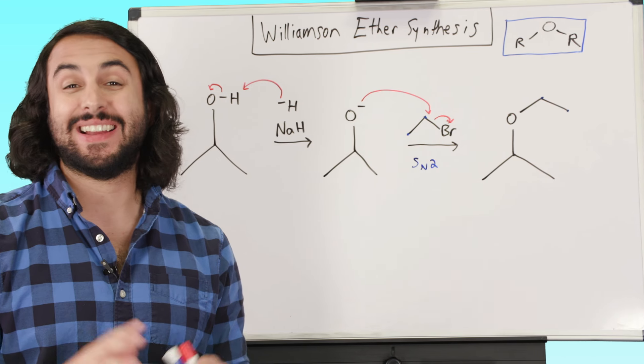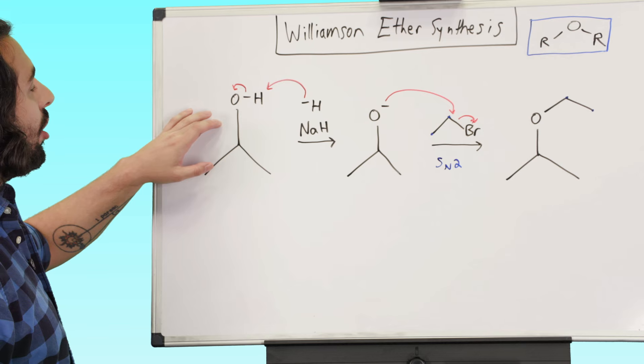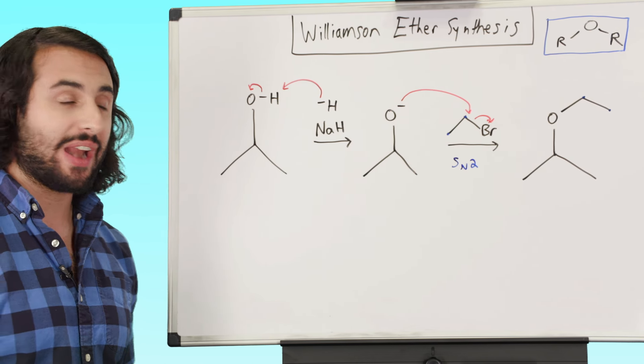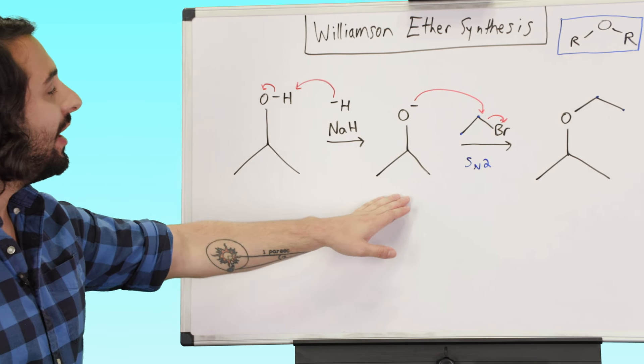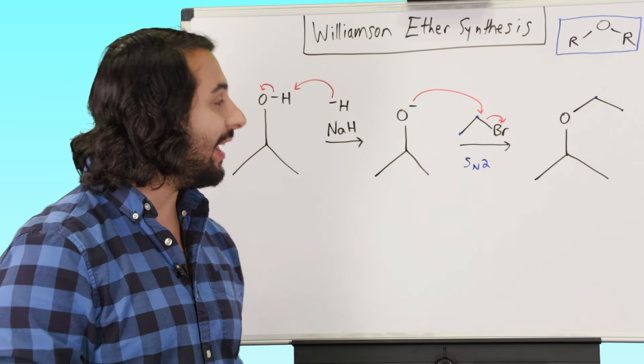So once again mechanistically extremely straightforward. All we are doing is deprotonating an alcohol. We're doing an acid-base reaction with an alcohol to get an alkoxide. And then that alkoxide is going to do SN2 on some alkyl halide. And we're going to get an ether.